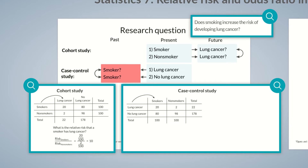The measured value is now at the top of the 2x2 table, as for the cohort study. We can now answer the question: what is the odds ratio of a study participant with lung cancer being a smoker compared to a study participant without lung cancer? Remember that the odds ratio quantifies the strength of the association between two events — in this case, smoking and lung cancer. We divide the odds of participants with lung cancer by the odds of participants without lung cancer: 20/2 divided by 80/98 gives us an odds ratio of 12.25.